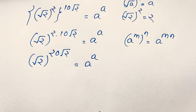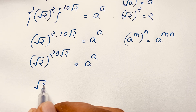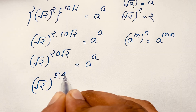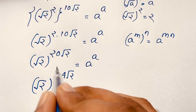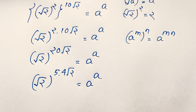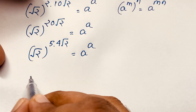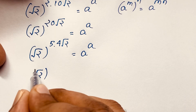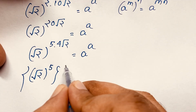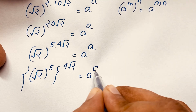Now, you can see that √2 with exponent 20 — I rewrite 20 as 5 times 4 — so it becomes (√2)^(5×4) times √2, which equals a to the power a. I take the 5 out and place the 4√2 inside the bracket, giving (√2)^5 whole to the power 4√2 times √2.